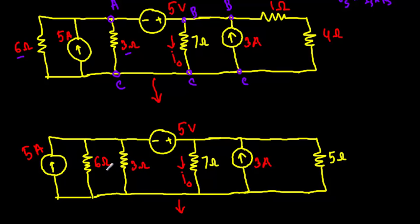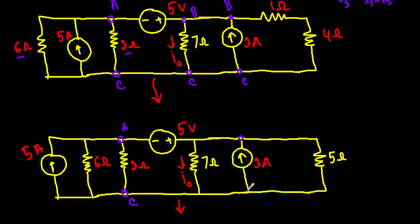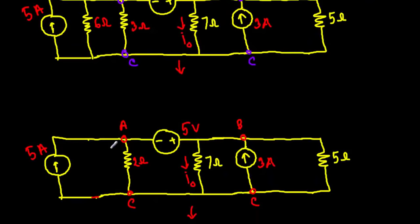Now look — this 6 ohm resistor and this 3 ohm resistance are connected in parallel between terminal A and terminal C, so I can reduce these two resistances into a single equivalent parallel resistance. Also, between terminals B and C, this 1 ohm and this 4 ohm resistance are connected in series, so I can add them to give a total resistance of 5 ohm.